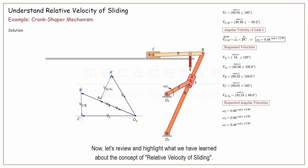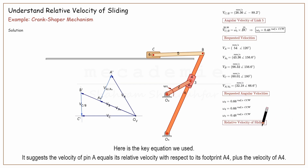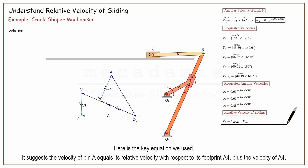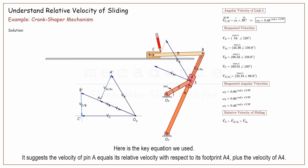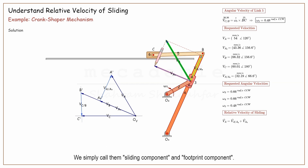Now let's review and highlight what we have learned about the concept of relative velocity of sliding. Here is the key equation we used: the velocity of pin A equals its relative velocity with respect to its footprint A4, plus the velocity of A4. In other words, the velocity of pin A has two components — its relative velocity with respect to its footprint on link 4, and the velocity of its footprint A4. We simply call them the sliding component and the footprint component.